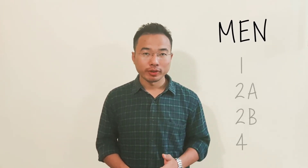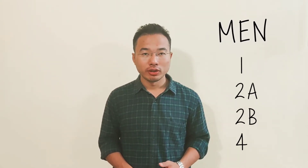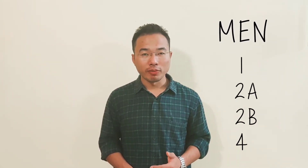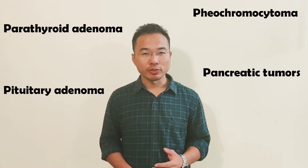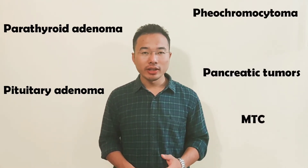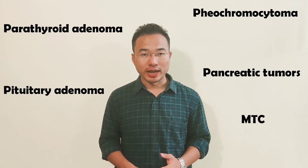In this video I'm going to talk about MEN syndrome, that is Multiple Endocrine Neoplasia syndromes. There are four types: MEN1, MEN2a, MEN2b, and MEN4. The various pathologies include pituitary adenoma, parathyroid adenoma, pheochromocytoma, pancreatic tumors, and medullary thyroid cancers. It can get quite confusing which pathologies belong to which MEN type.